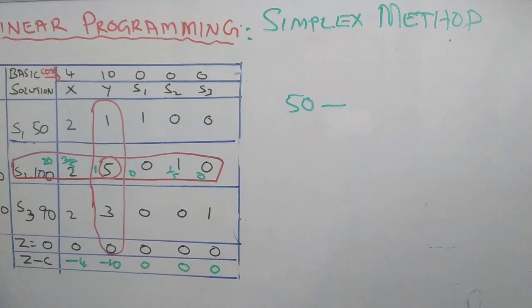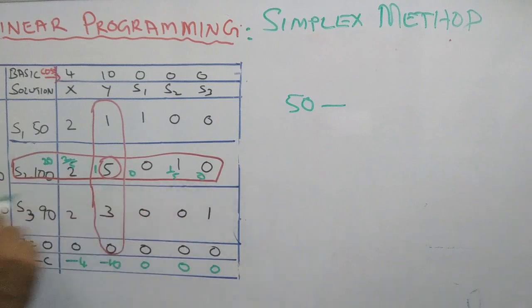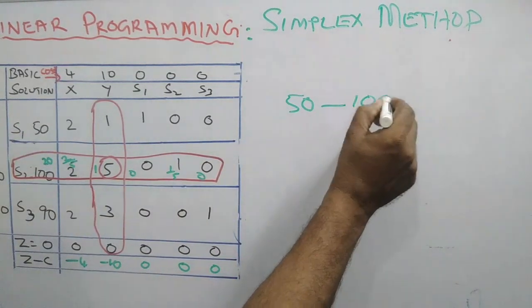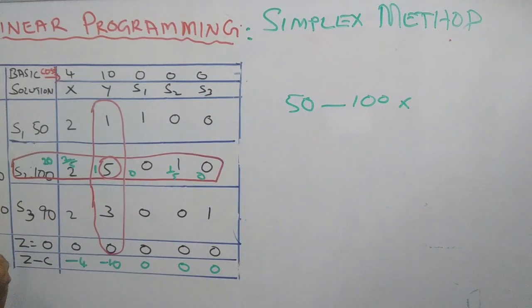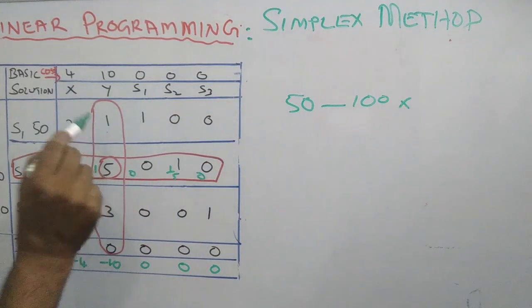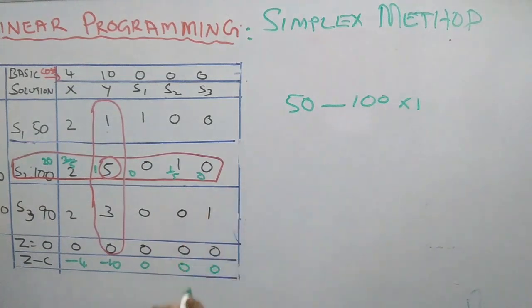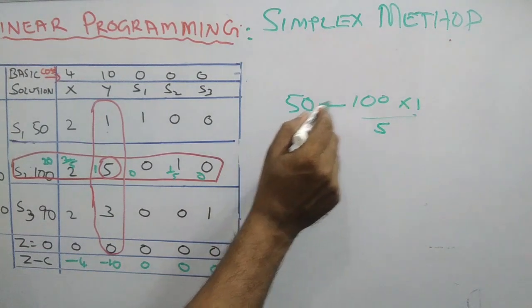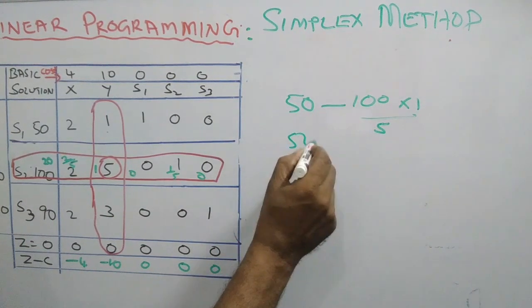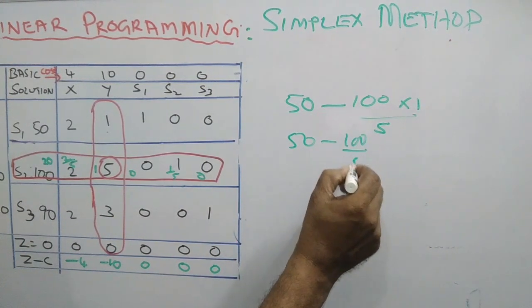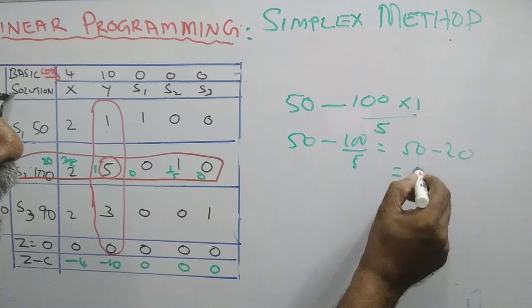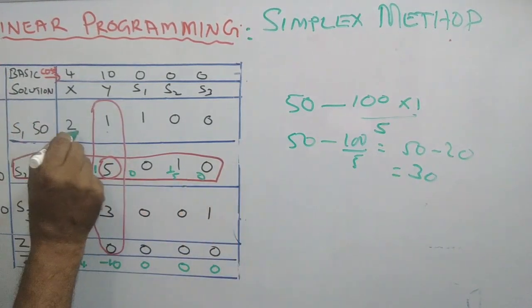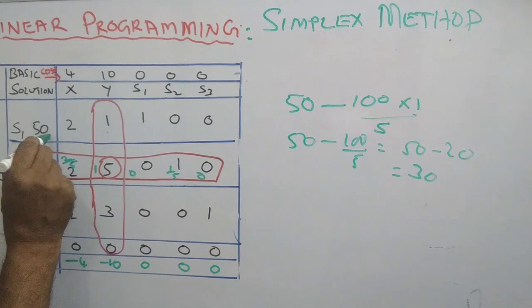This computation is most important — you should follow, study, and understand it. For the pivot column, the old number 50 minus: the corresponding number in the pivot row 100, into the corresponding number in the pivot column 1, by the key number 5. That is 50 minus 100 by 5, which is 50 minus 20, equal to 30. This number is 30.